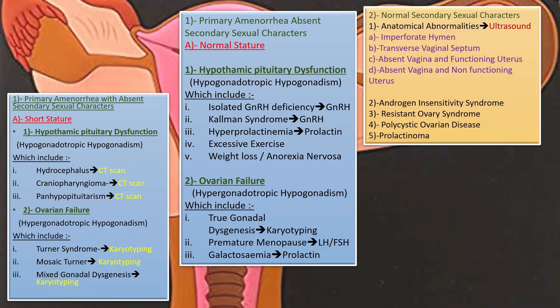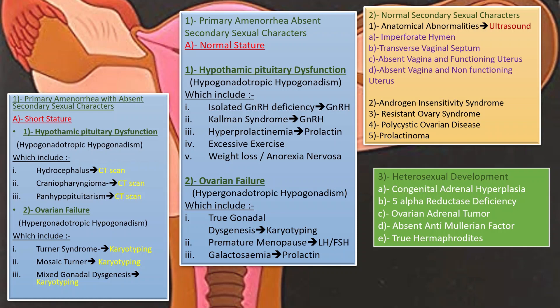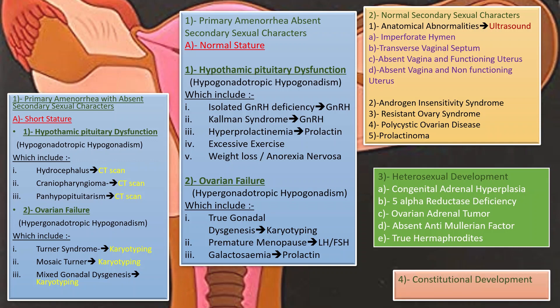For primary amenorrhea with normal secondary sexual characteristics: anatomical abnormalities like imperforate hymen, transverse vaginal septum, absent vagina with functioning uterus, and absent vagina with non-functioning uterus are evaluated by ultrasound. Androgen insensitivity by ultrasound; resistant ovarian syndrome by ultrasound and hormonal levels; polycystic ovary disease by ultrasound plus hormone levels; prolactinoma by serum prolactin. Congenital adrenal hyperplasia is diagnosed by elevated 17-alpha-hydroxyprogesterone. 5-alpha-reductase deficiency by 5-alpha-reductase level. Ovarian and adrenal tumors by CT scan, DHEA, and serum testosterone levels. True hermaphrodite by gonadal biopsy. Constitutional delay is a purely clinical diagnosis.